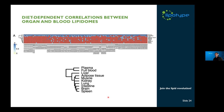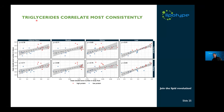There is an interesting confirmation of previous results: the liver lipidome has quite a strong correlation with lipid composition of the blood, while other samples like brain and spleen are not so much affected. Triglycerides actually correlate most consistently across the different tissues, especially for hydrocarbon chain length and double bond number. There is both in full blood and plasma a very strong positive correlation of triglyceride composition with other tissues like adipose tissue, muscle, kidney, and liver.